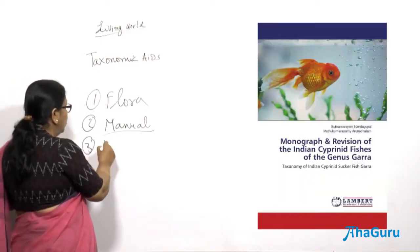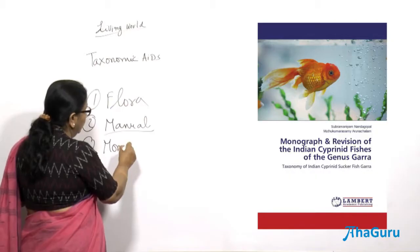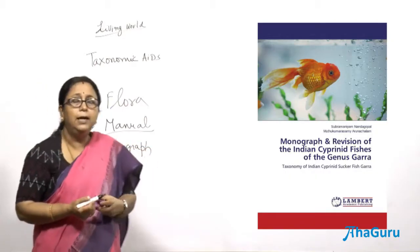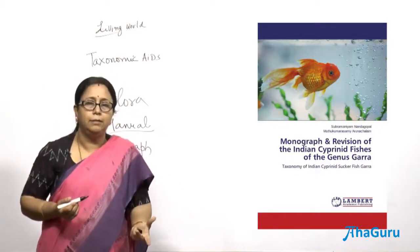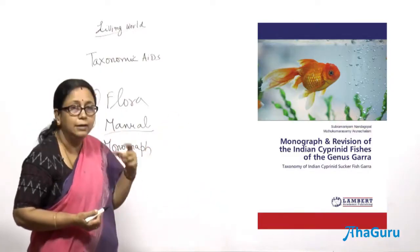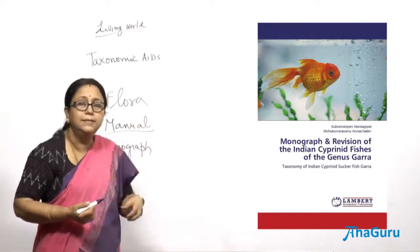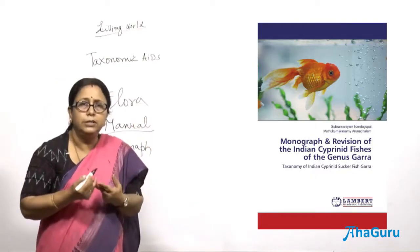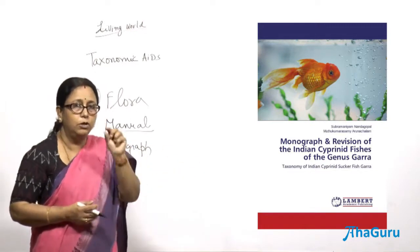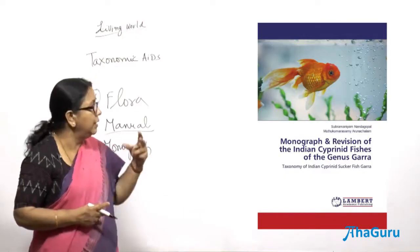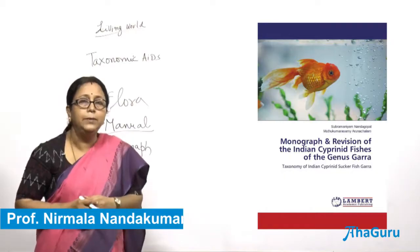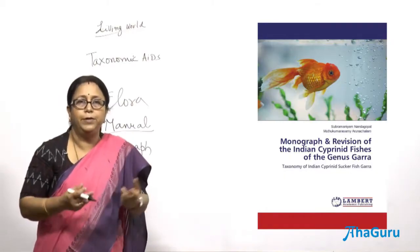There is one more taxonomical aid called a monograph. A monograph explains a particular taxon in detail. For example, a monograph on only one genus — such as the genus Gaara — would talk about that particular genus in detail, covering its features and characteristics completely. That is called a monograph, which talks about one particular taxon. These are the different taxonomic aids which help us classify organisms correctly.